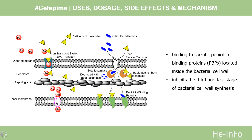Mechanism of Action. Cefepime is a bactericidal cephalosporin with a mode of action similar to other beta-lactam antibiotics. Cefepime disrupts bacterial cell walls by binding and inhibiting transpeptidases, known as penicillin-binding proteins (PBPs), which are enzymes in the final stages of peptidoglycan layer synthesis. This results in the lysis and death of susceptible microorganisms.